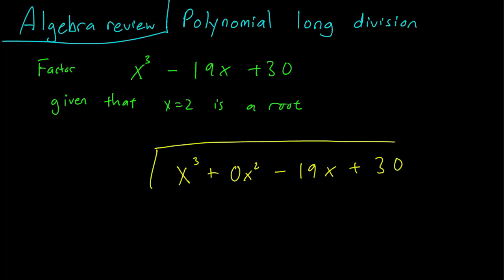So x equals 2 is a root, which implies that x minus 2 is a factor of the polynomial, and we want to figure out what we have left when we divide out the factor x minus 2. The first step is easy — we start here. We need to figure out what term multiplied by x will give us x cubed.